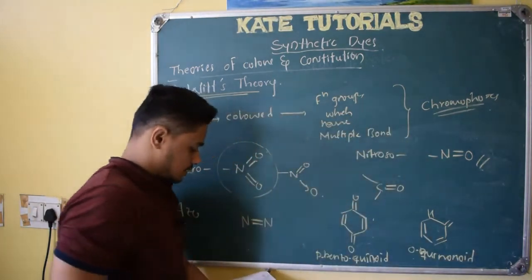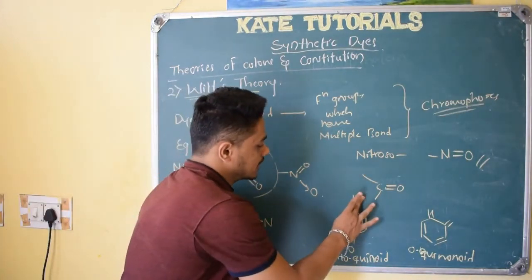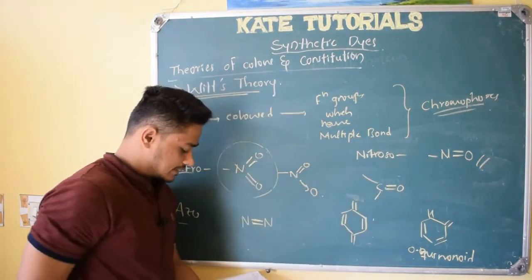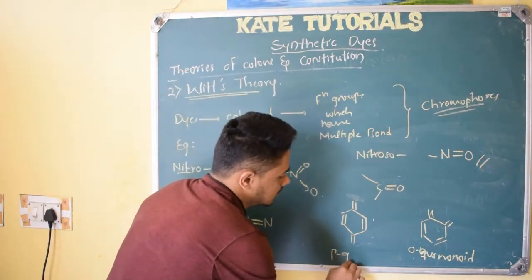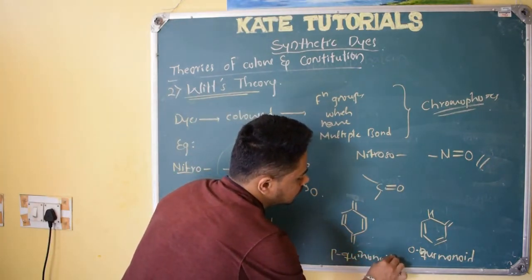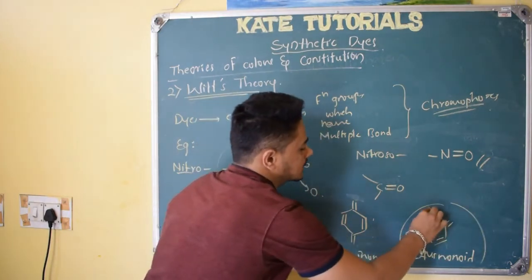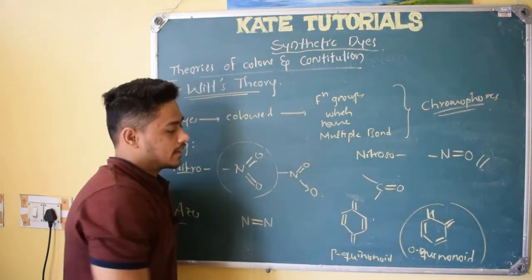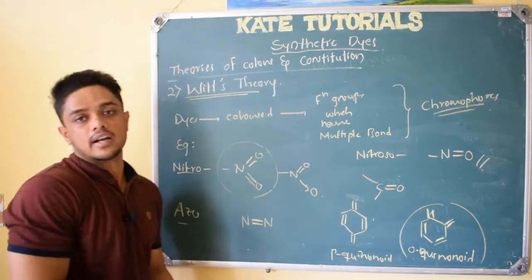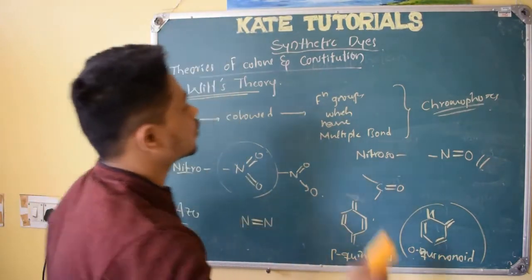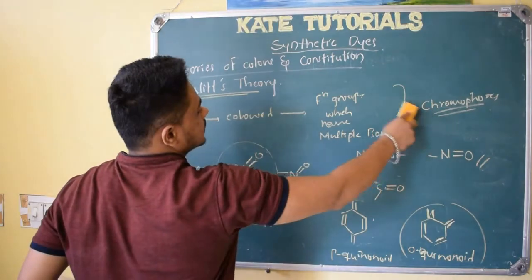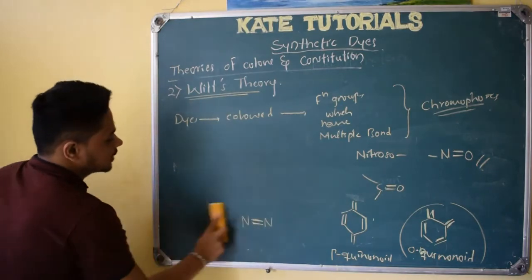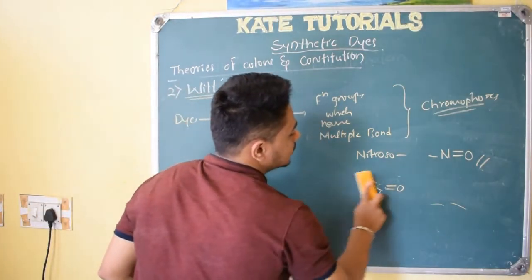So this acts as a chromophore and the name is para-benzoquinoid. This is ortho-quinoid — you should know the structure. Ortho-benzoquinoid has double bond, single bond, double bond, single bond, double bond, single bond alternating. These all act as chromophores. Definition of chromophores: they are functional groups having multiple bonds. Because of these chromophores, which have multiple bonds, the dyes will be colored according to this theory.